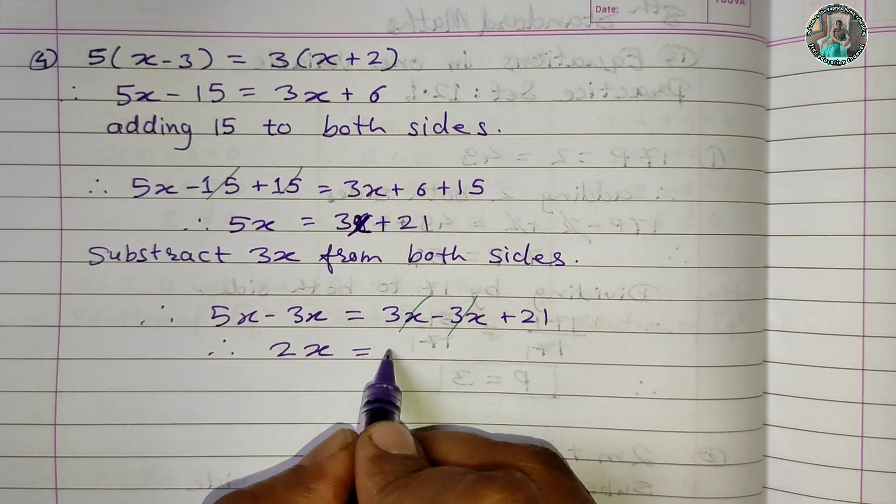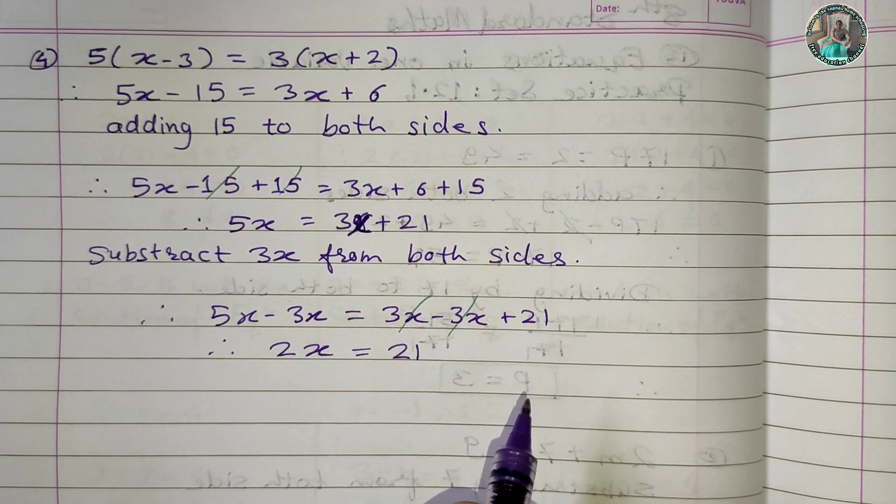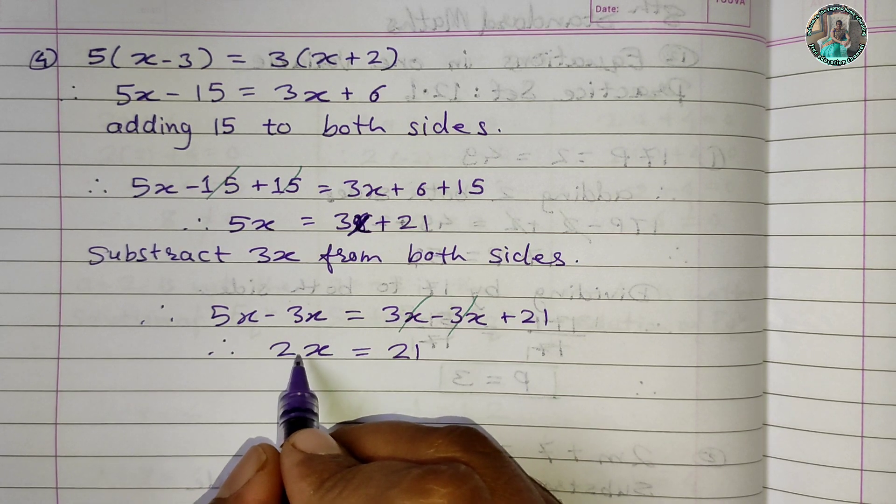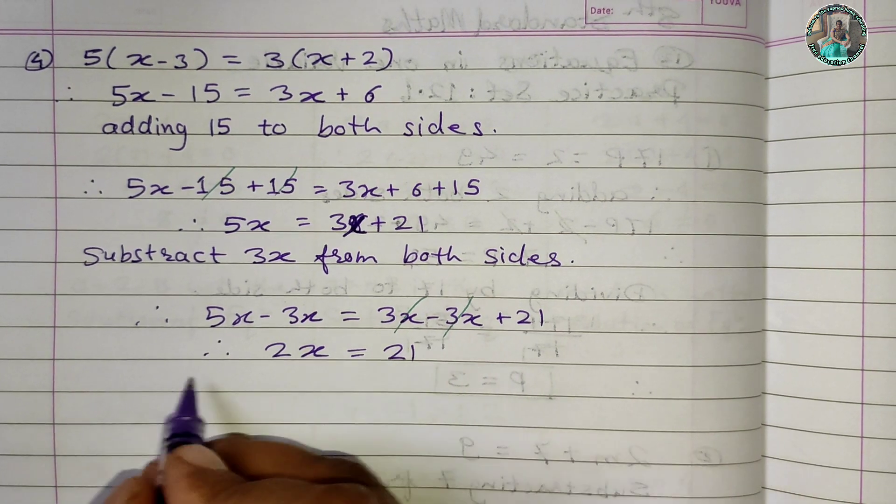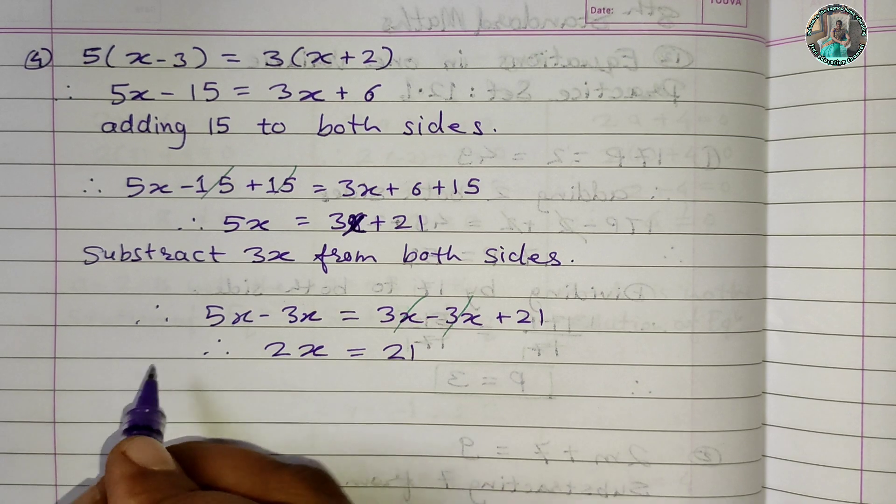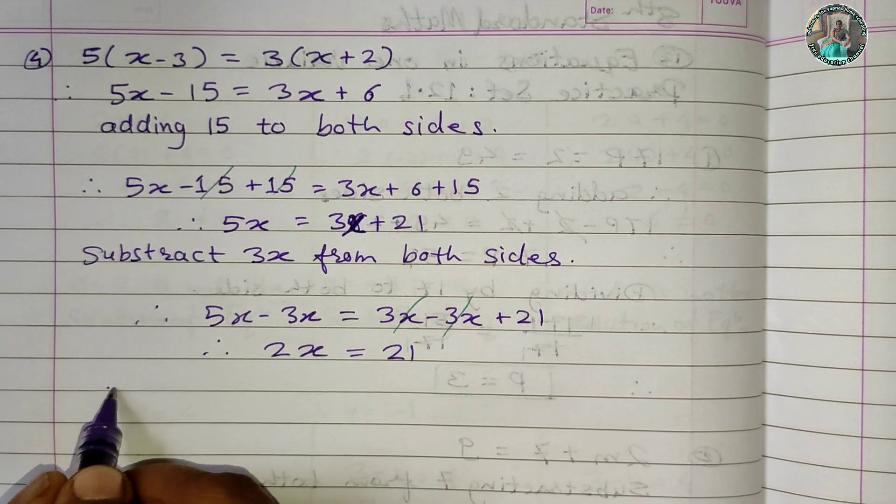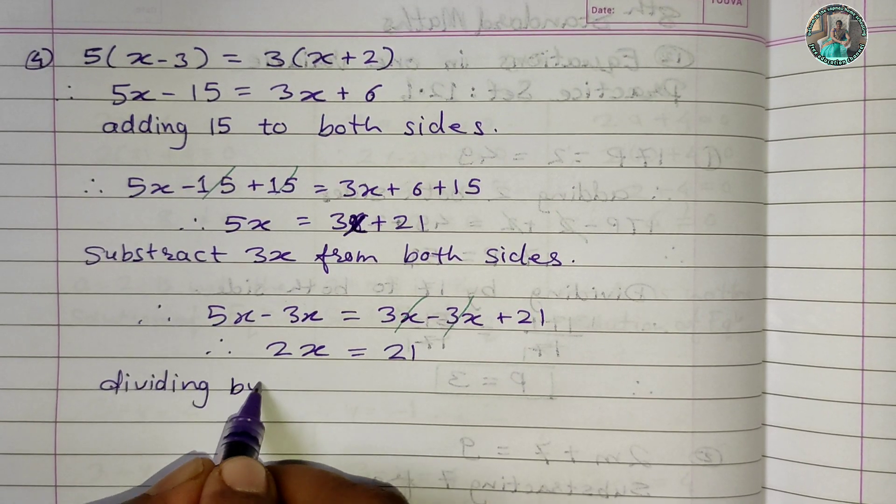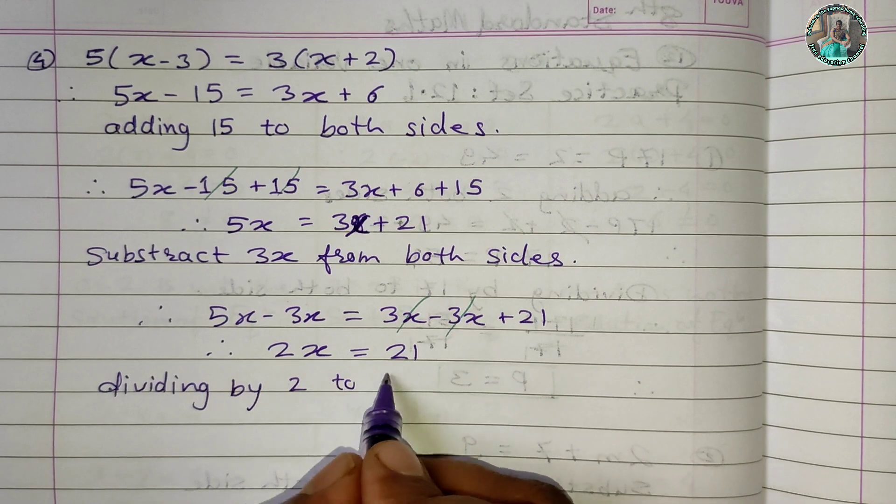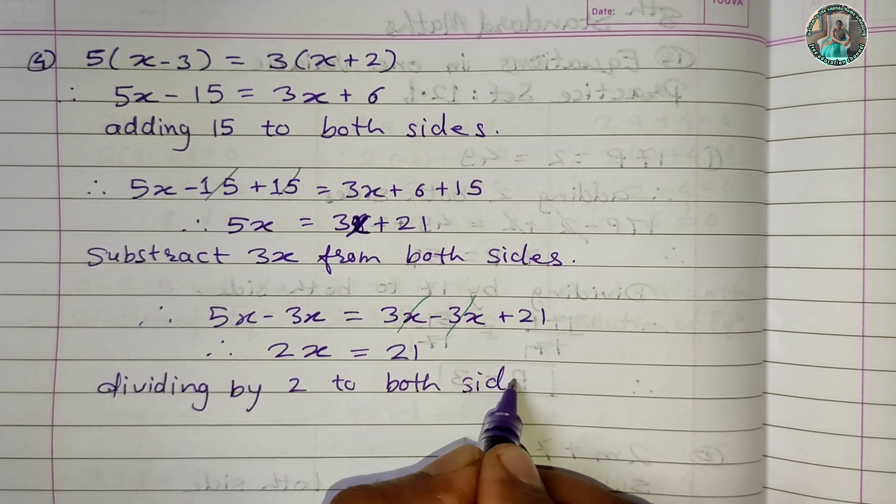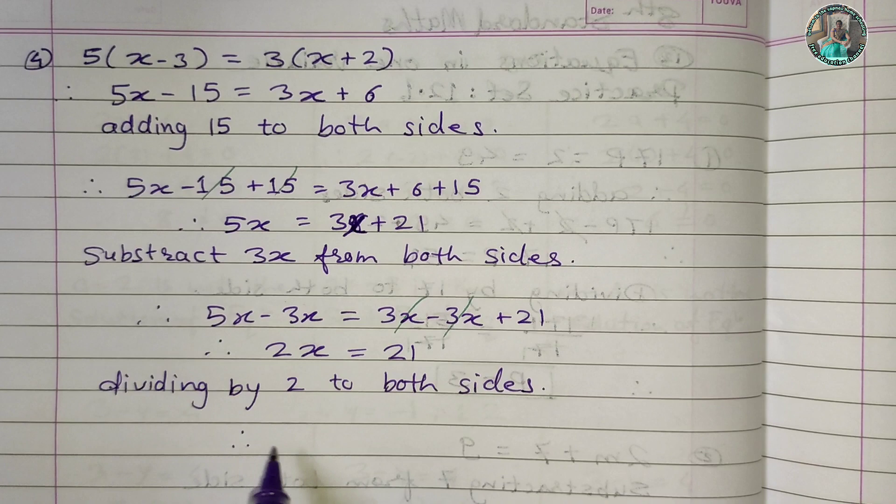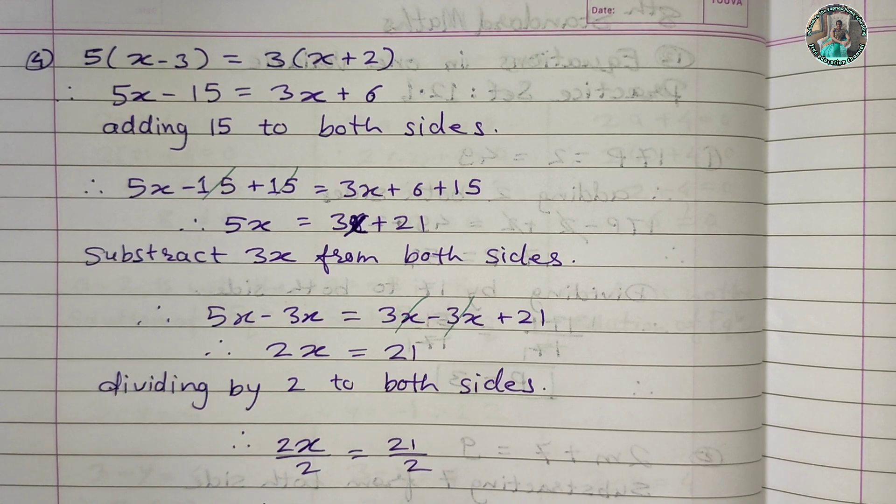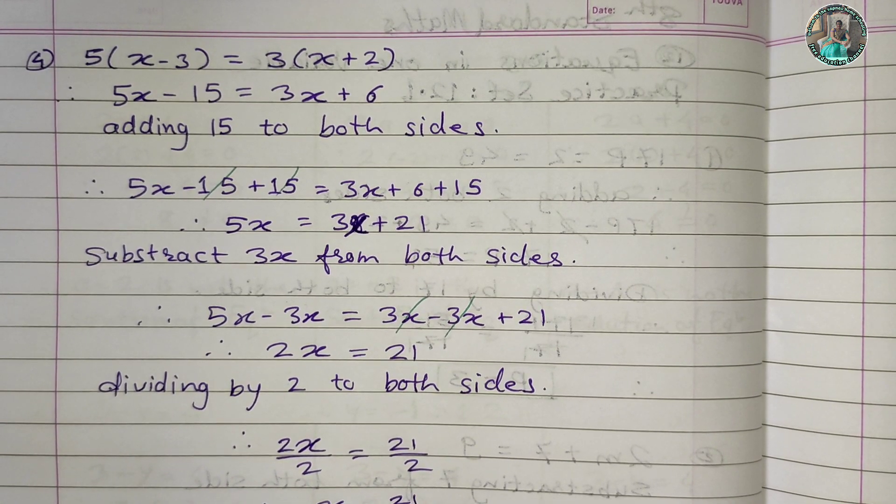Dividing by 2 to both sides: 2x/2 = 21/2. Therefore, x = 21/2.